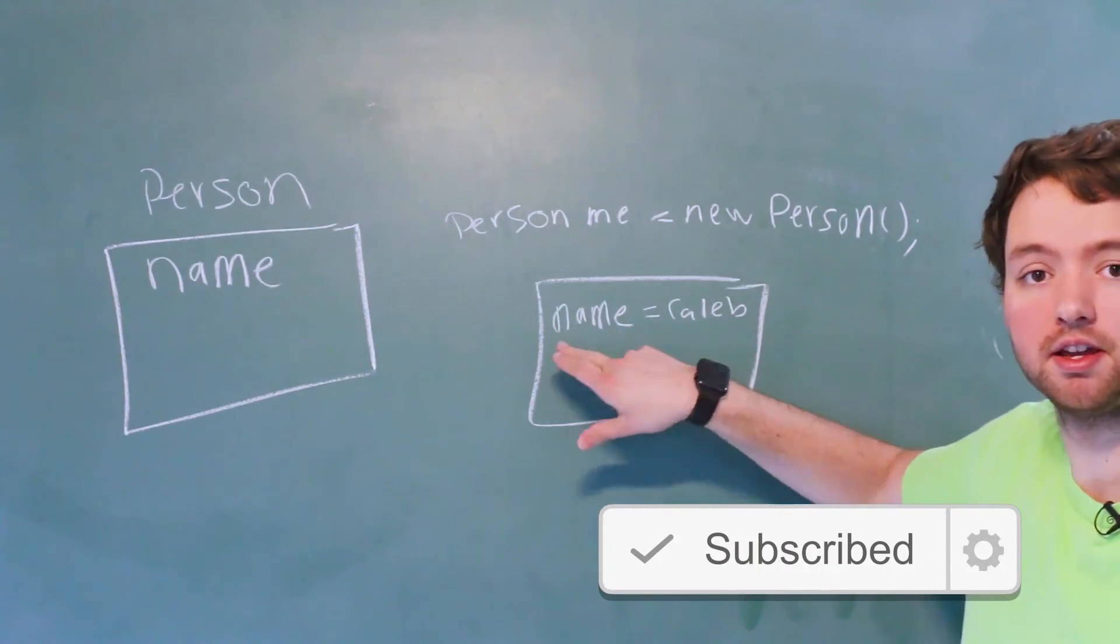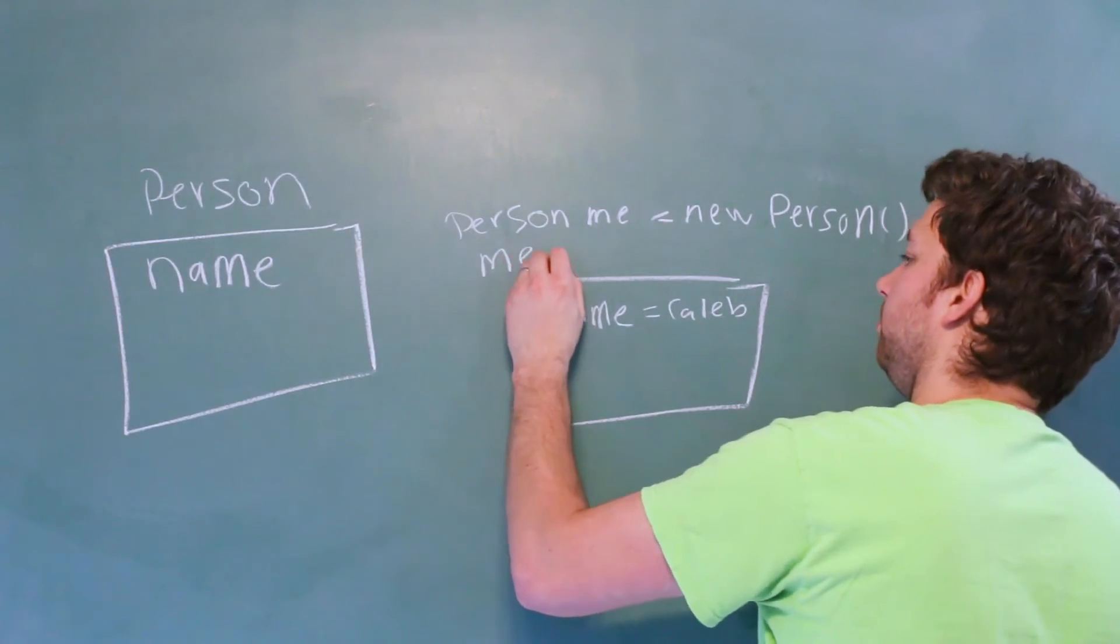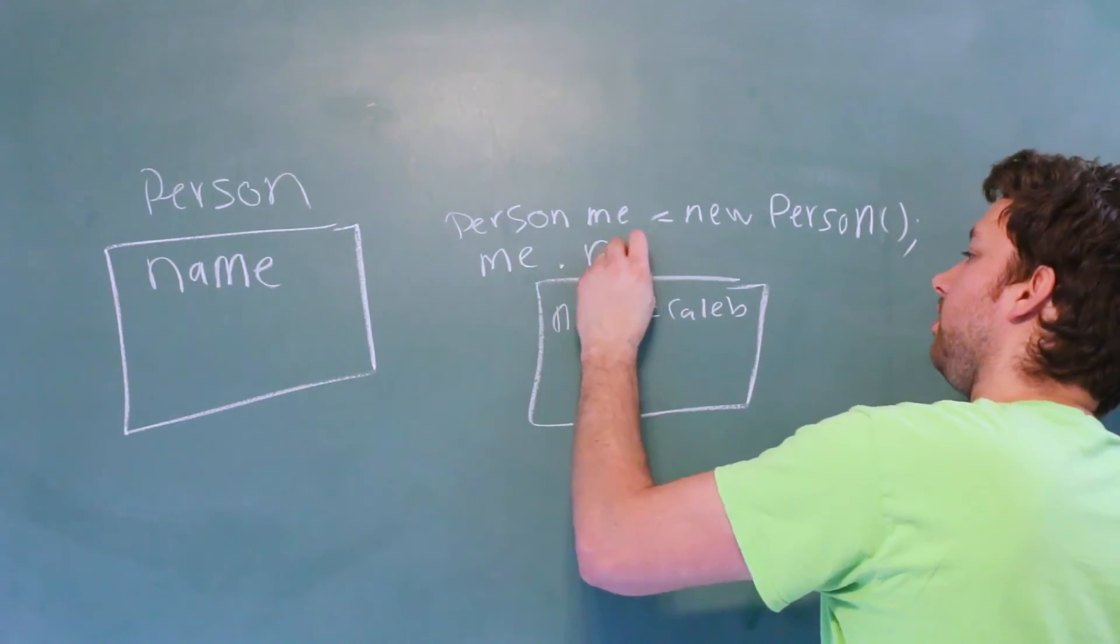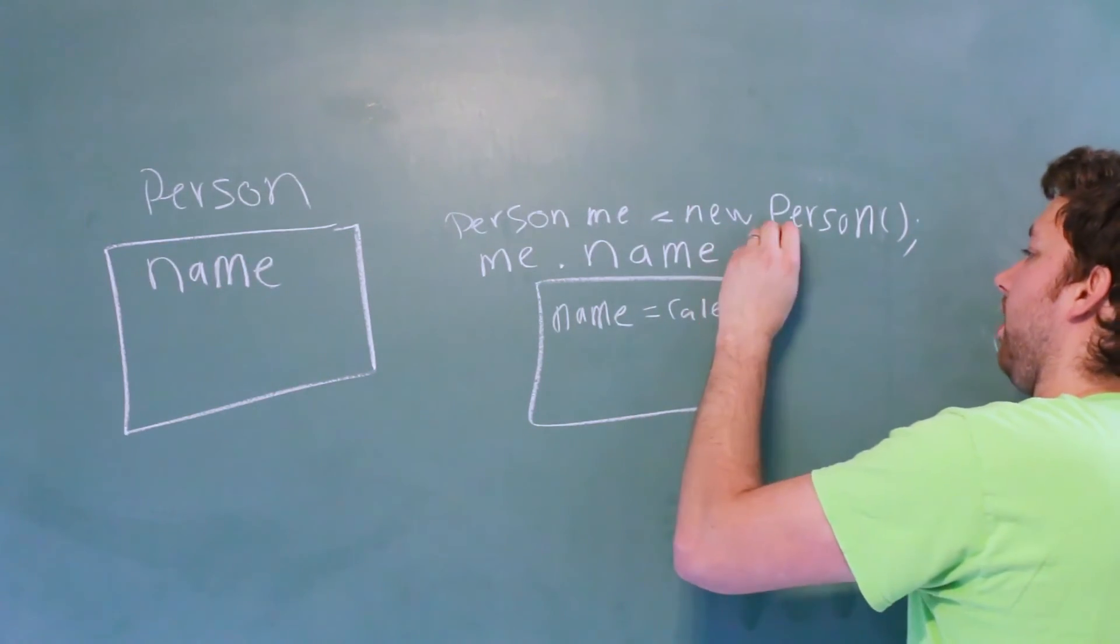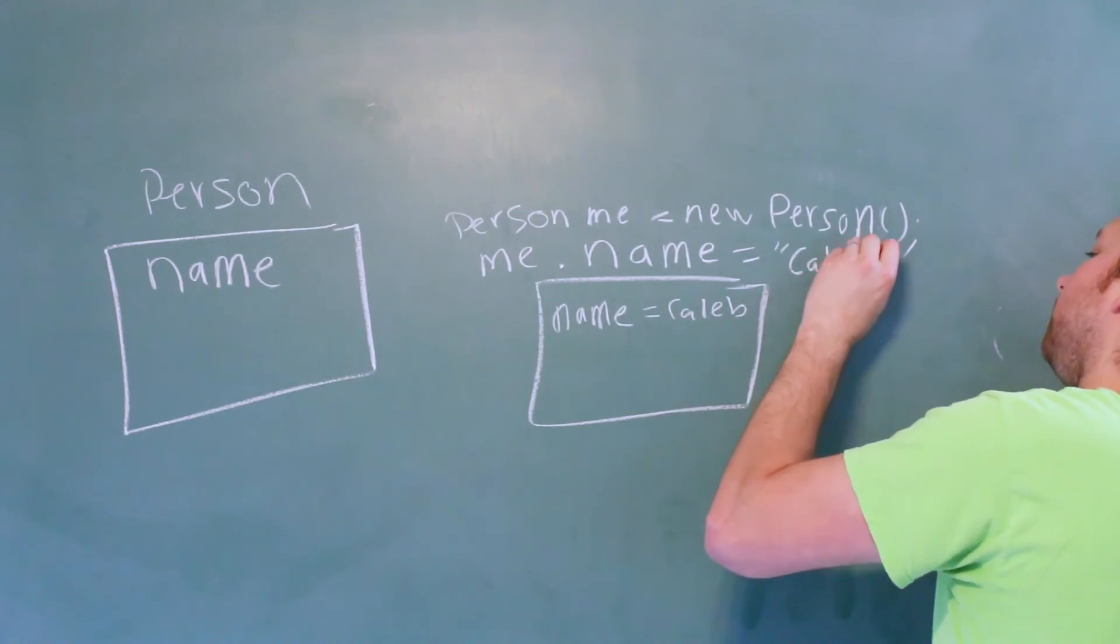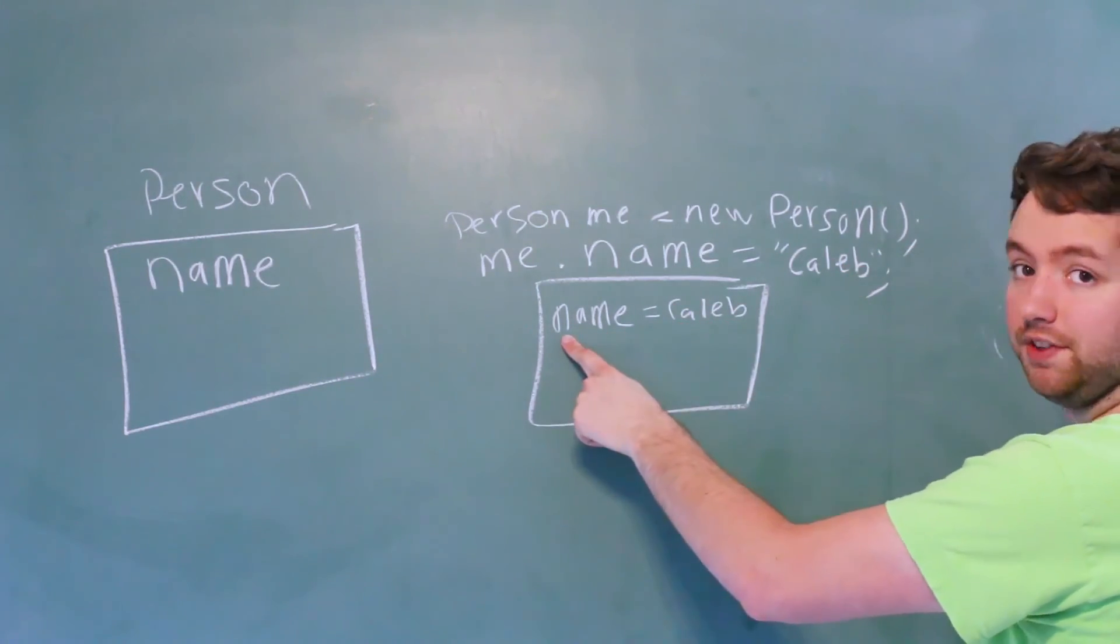Then we can access that field by saying me dot name, and we can assign it a value such as Caleb. So that is how we would do something such as assigning Caleb to that field.